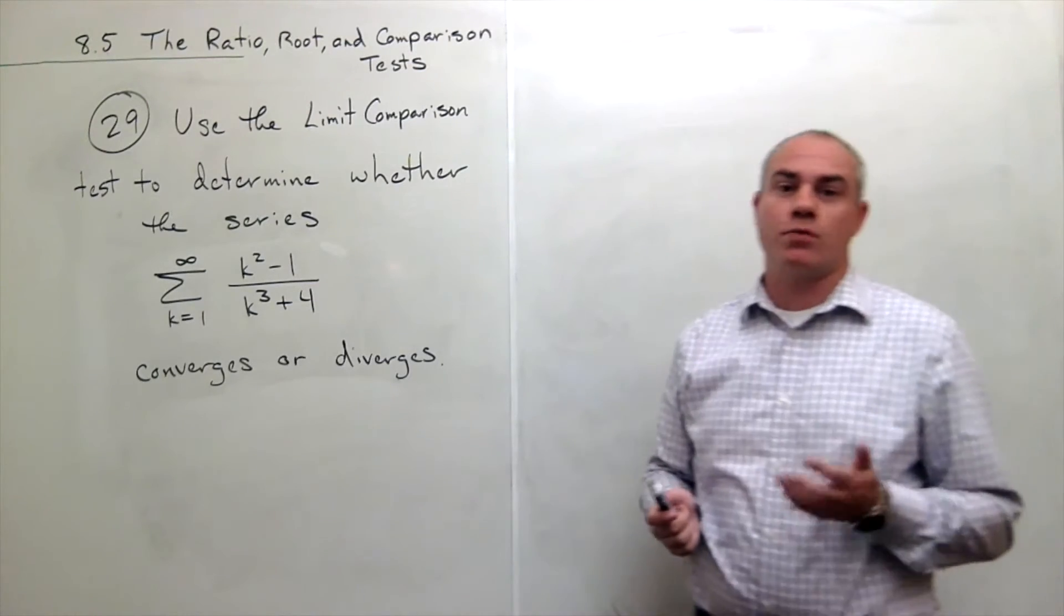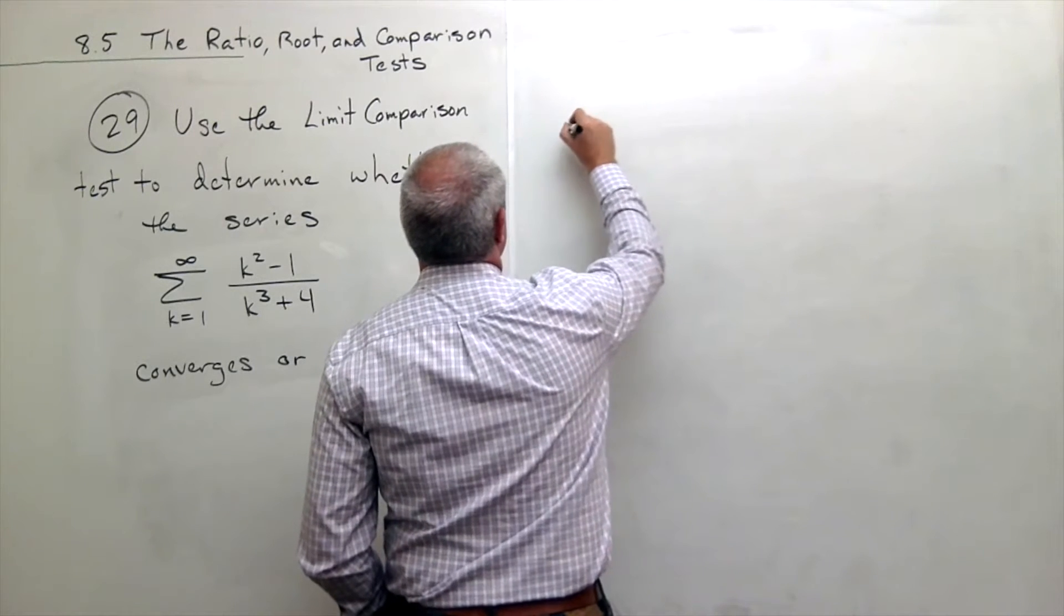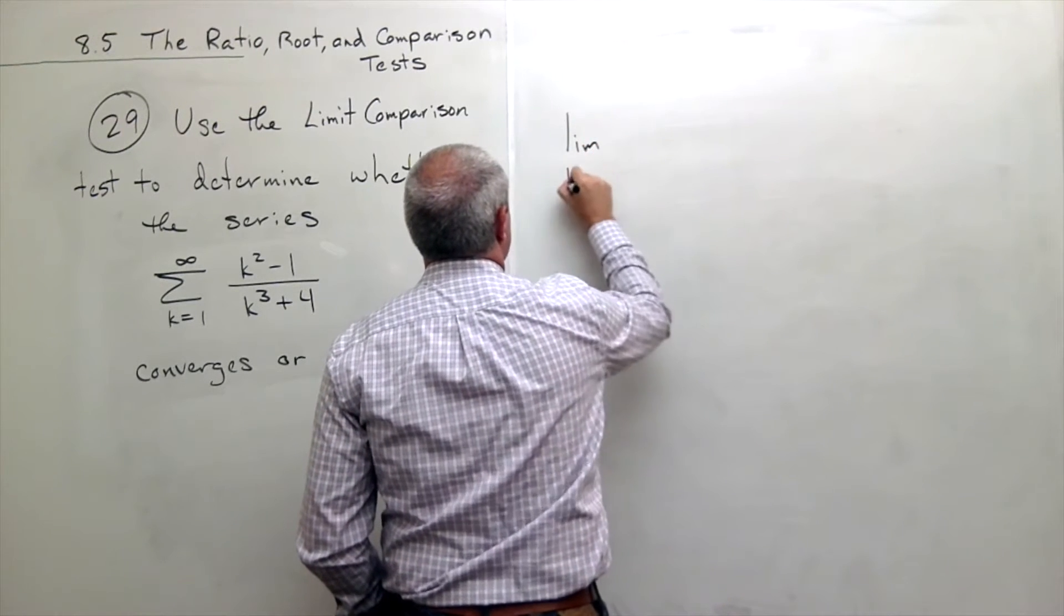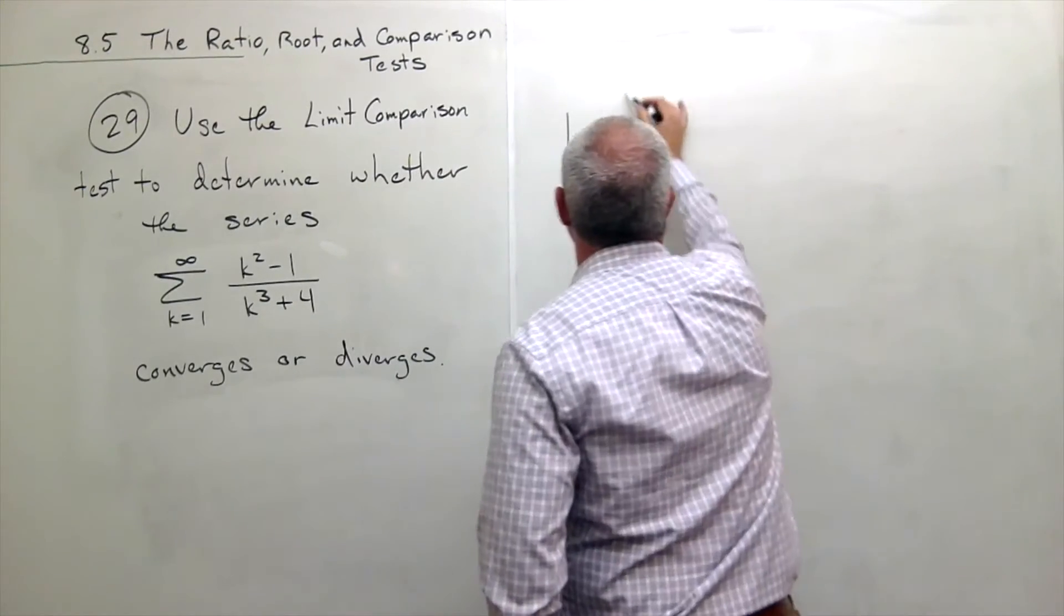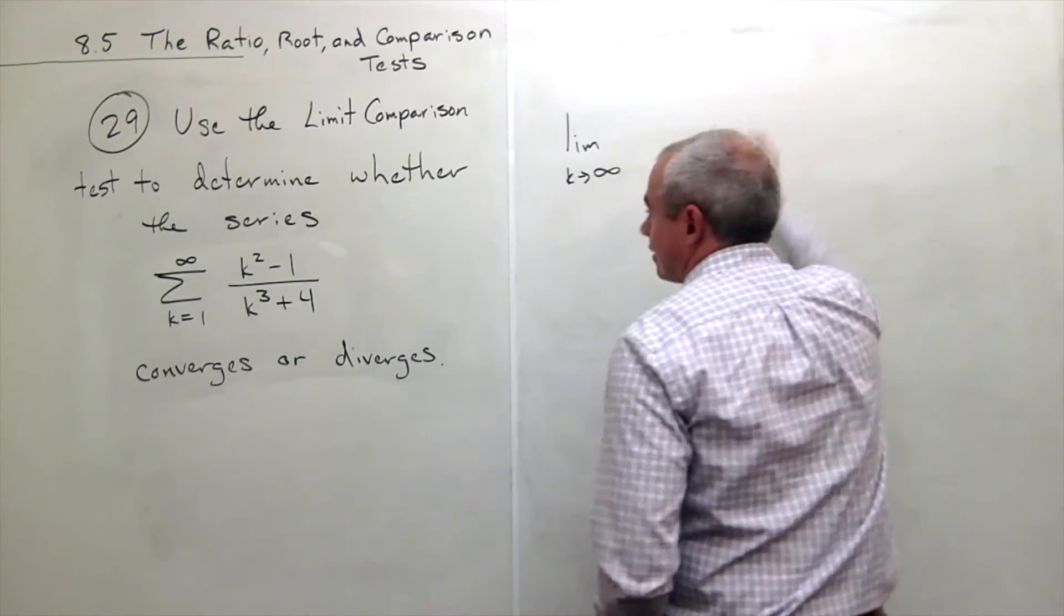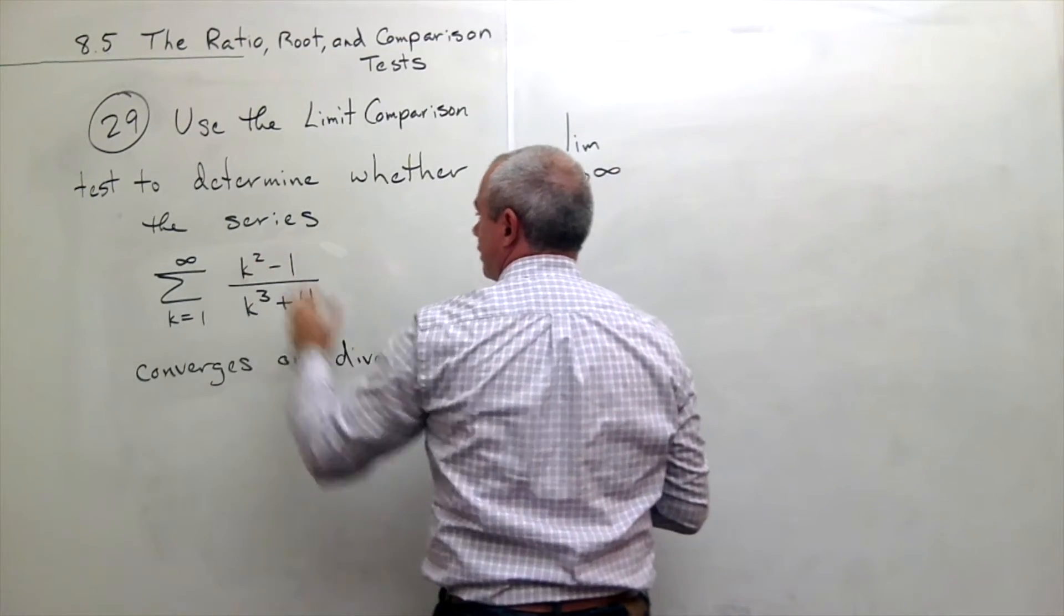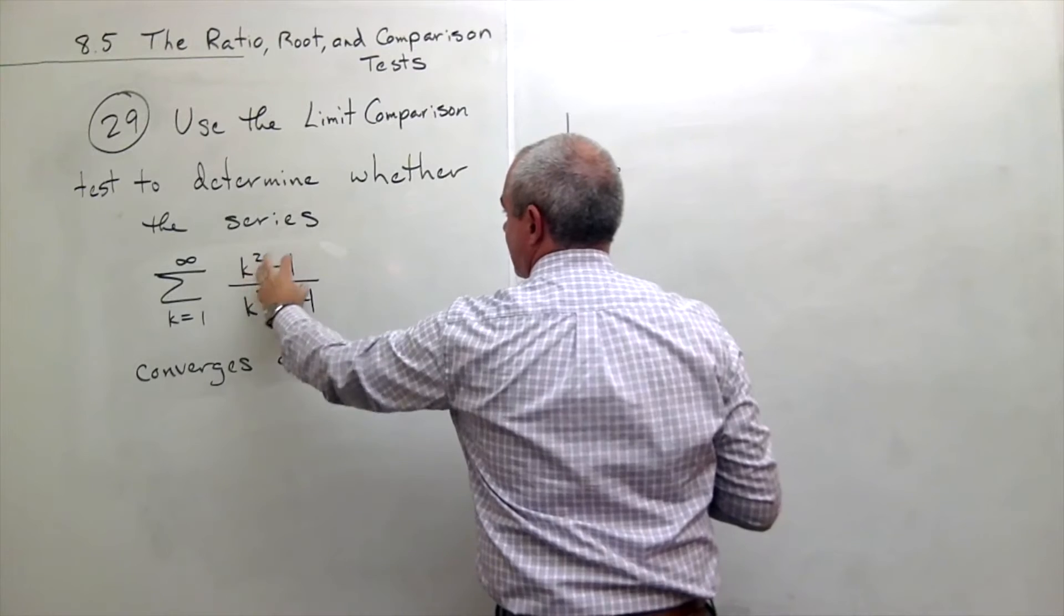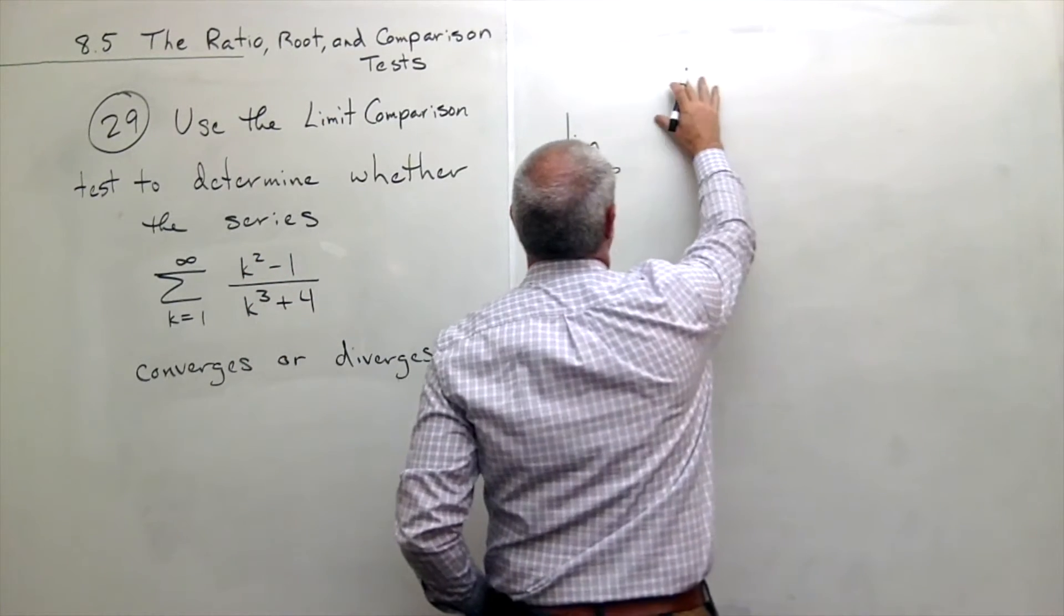And how the limit comparison test works is the following. What I'm going to do is set this up by taking the limit as k goes to infinity of, what I do is I put the sequence of the series that I don't know about on the top. So I'm going to take this k squared minus 1 over k cubed plus 4 and write it on top.